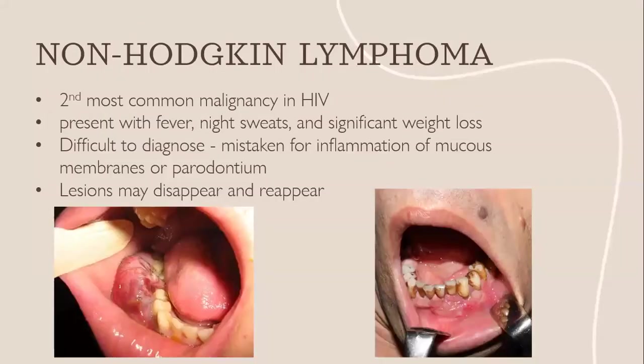Non-Hodgkin's lymphoma is the second most common malignancy in HIV. It can present as single or multiple ulcerations or edematous lesions within the oral cavity. The onset is sudden, usually painless, and the lesions grow quickly. Patients may present with fever, night sweats, and significant weight loss. It can be difficult to diagnose as it may be mistaken for inflammation of mucous membranes or the periodontium, and the lesions may disappear and reappear.